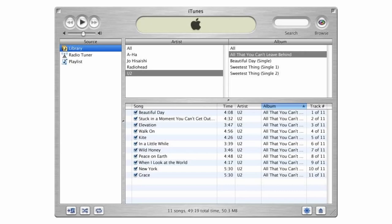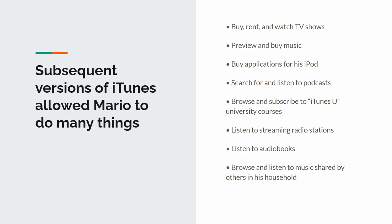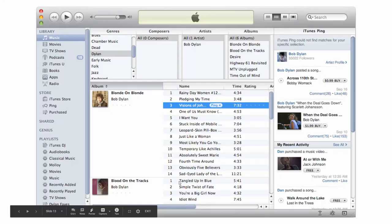Music was organized under rock, alternative pop, hip-hop, etc. Movies and television shows were organized under family, comedy, action. As listed in Chapter 1 of the Polar Bear book, iTunes was no longer just where Mario organized his CD collection — it was where he went to buy and rent TV shows and movies, preview and buy music, buy applications for his iPod, search for and listen to podcasts, browse and subscribe to iTunes U courses, listen to streaming radio, listen to audiobooks, and browse music shared by others in his household. All of these categories added complexity to a product that used to be relatively simple and presented unique information organizational challenges.